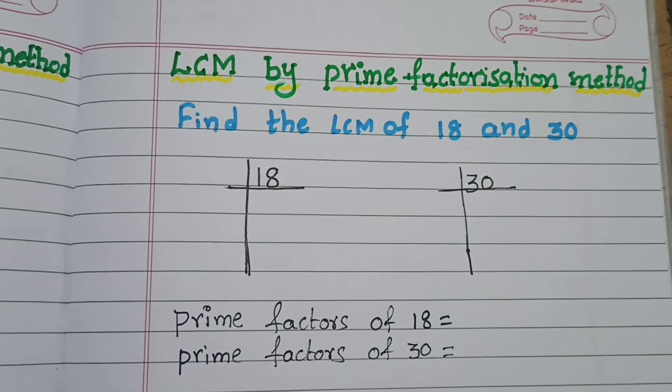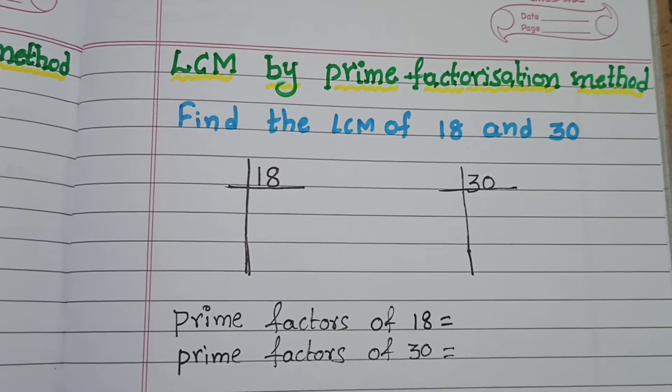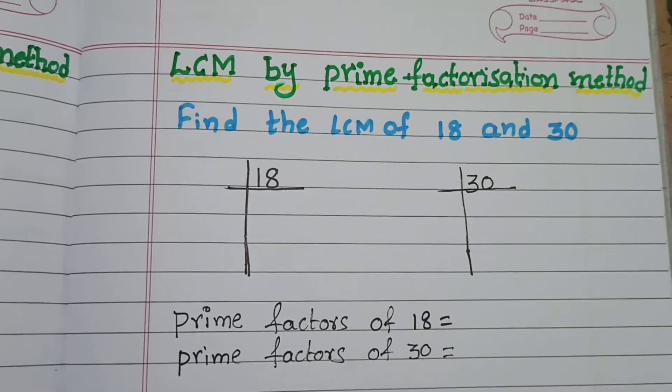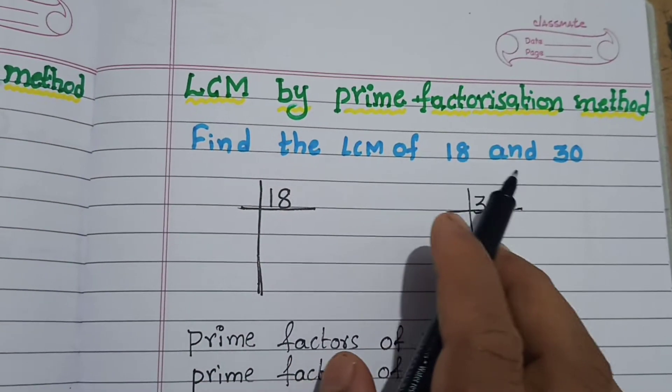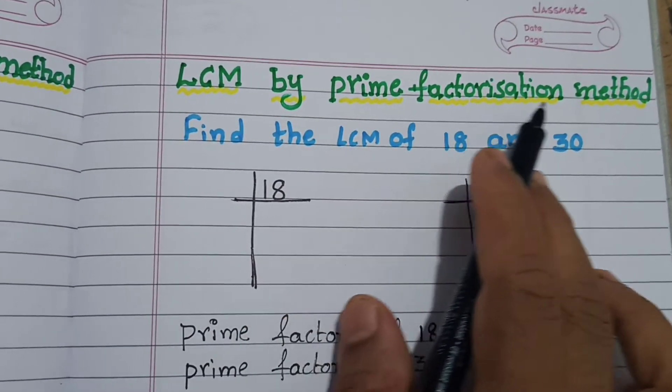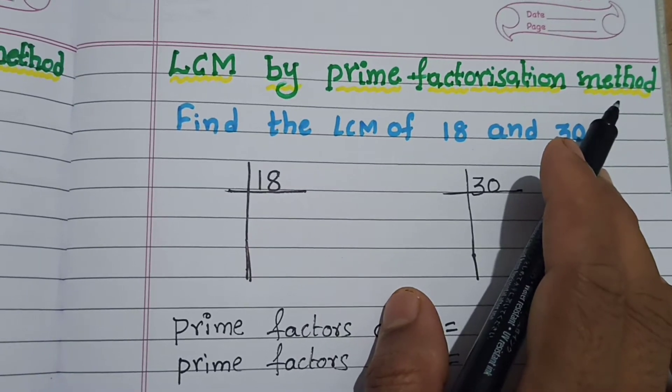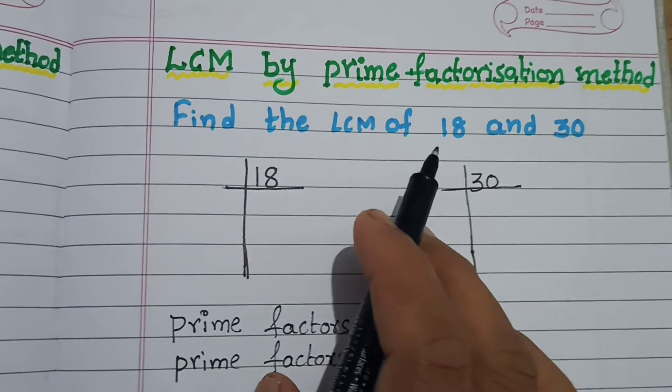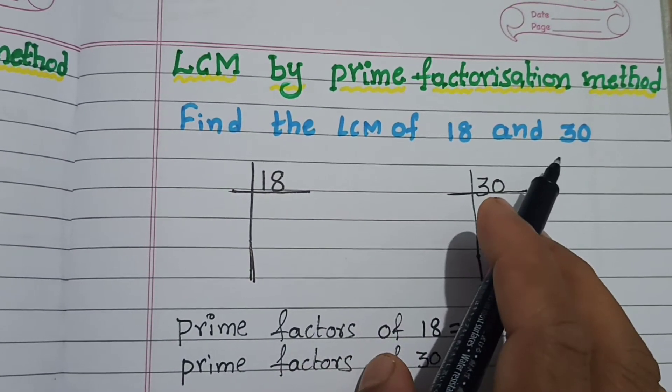Hello everyone, welcome back to tricky math. Today's topic is find the LCM of given numbers by using prime factorization method. Here the given numbers are 18 and 30.